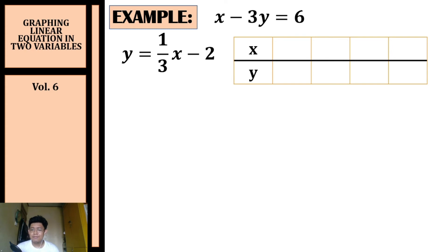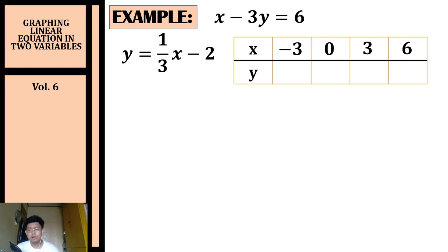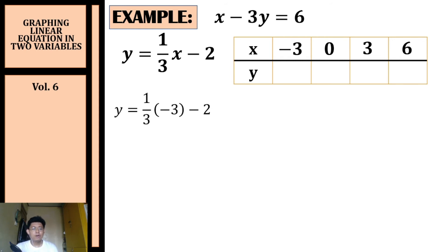Since the coefficient of x in slope-intercept form is a fraction, to avoid fractional y values, look at the denominator and pick x values that are multiples of that denominator. In this case the denominator is three, so I picked negative three, zero, three, and six. By choosing multiples of three, our y values will be integers.